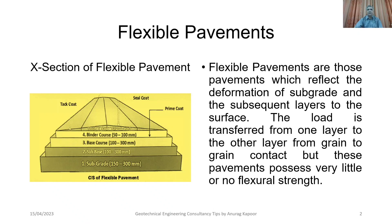Regarding the cross section of the flexible pavement: first of all, a subgrade layer of a specified thickness is laid, followed by a sub-base layer, and then a base course is laid upon that, and then a binder course. Before laying the binder course, a prime coat is applied on top of the base course.